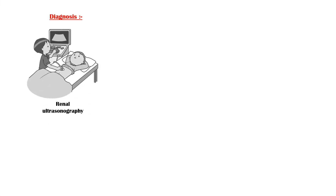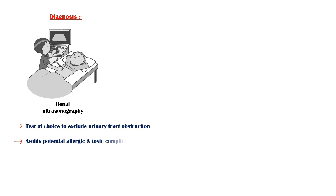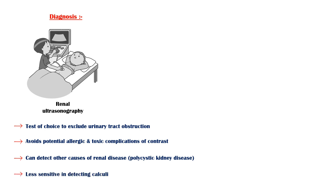Renal ultrasonography is the test of choice to exclude urinary tract obstructions. It is cheaper, widely available, and avoids potential allergic and toxic complications of contrast used in other imaging modalities. It can also detect other causes of renal disease such as polycystic kidney disease. However, ultrasound is less sensitive in detecting renal calculi and is operator dependent.